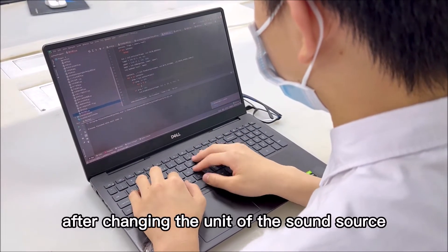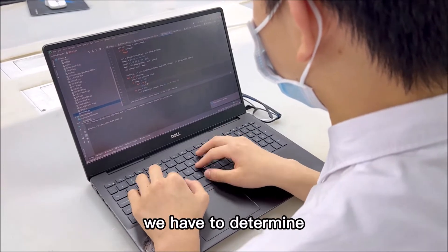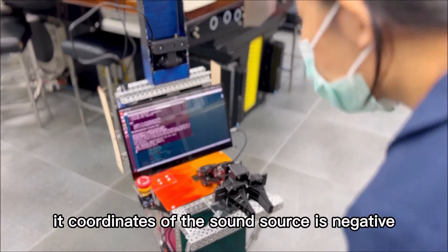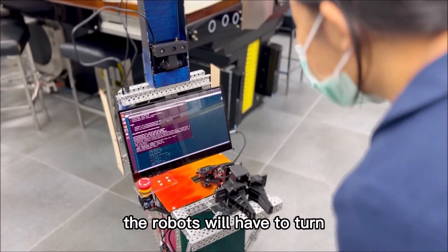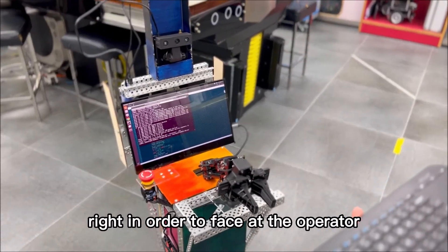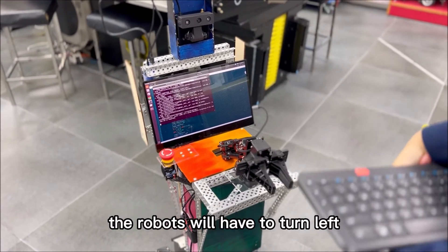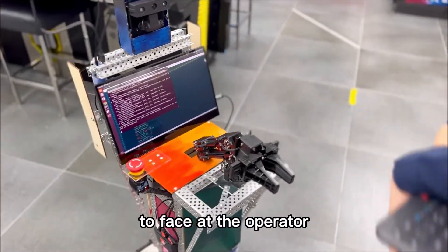After changing the unit of the sound source, we have to determine if the angle is negative or positive. If the coordinate is negative, the robot will turn right to face the operator. If the coordinate is positive, the robot will turn left to face the operator.